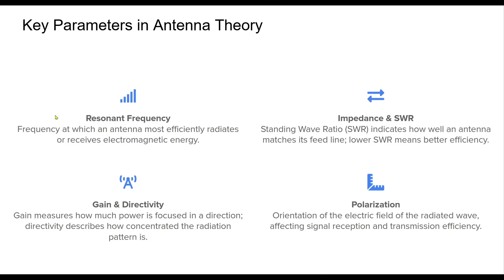Understanding key parameters in antenna theory is essential for optimizing performance. The resonant frequency is where an antenna operates most efficiently, often a half-wave of the operating signal. Impedance matching and standing wave ratio determine how well the antenna transfers power — ideal conditions result in an SWR close to 1 to 1. Gain and directivity define how much and where energy is radiated; high-gain antennas focus energy in a particular direction for better reception. Finally, polarization — horizontal, vertical, or circular — plays a critical role in ensuring signals are received properly and efficiently.